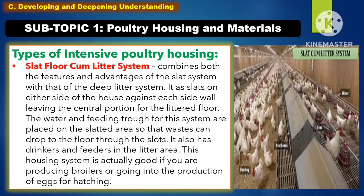Another type of intensive poultry housing is the slotted floor cum litter system. It combines both features and advantages of the slotted system with that of the deep litter system. It has slots on either side of the house against each wall, leaving the central portion for the littered floor. The water and feeding troughs for this system are placed on the slotted area so that waste can drop through the slots. It also has drinkers and feeders in the littered area. This housing system is actually good if you are producing broilers or going into the production of eggs for hatching.